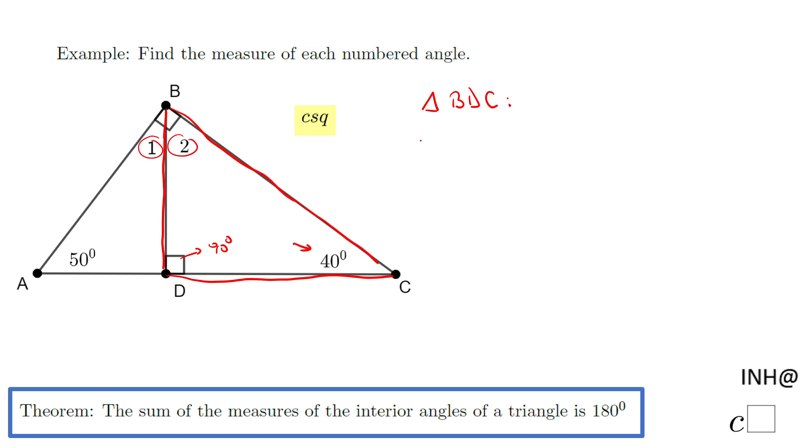I'm going to write it like this: the measure of angle 2, the one we need to find, plus 90° plus 40° equals 180°. So we have m∠2 + 90 + 40, which is 130, equals 180.